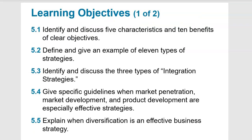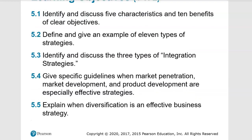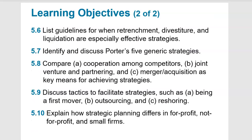In this chapter we're going to discuss 5 characteristics and 10 benefits of a clear objective. We're going to define examples of 11 types of strategies, discuss 3 types of integration strategies, give specific guidelines when market penetration, market development, and product development are especially effective strategies, explain when diversification is an effective business strategy. We're going to list guidelines for retrenchment, divestiture, and liquidation, identify and discuss Porter's 5 generic strategies. We're going to compare cooperation among competitors, discuss tactics, and explain how strategic planning is different for for-profit and non-profit companies.